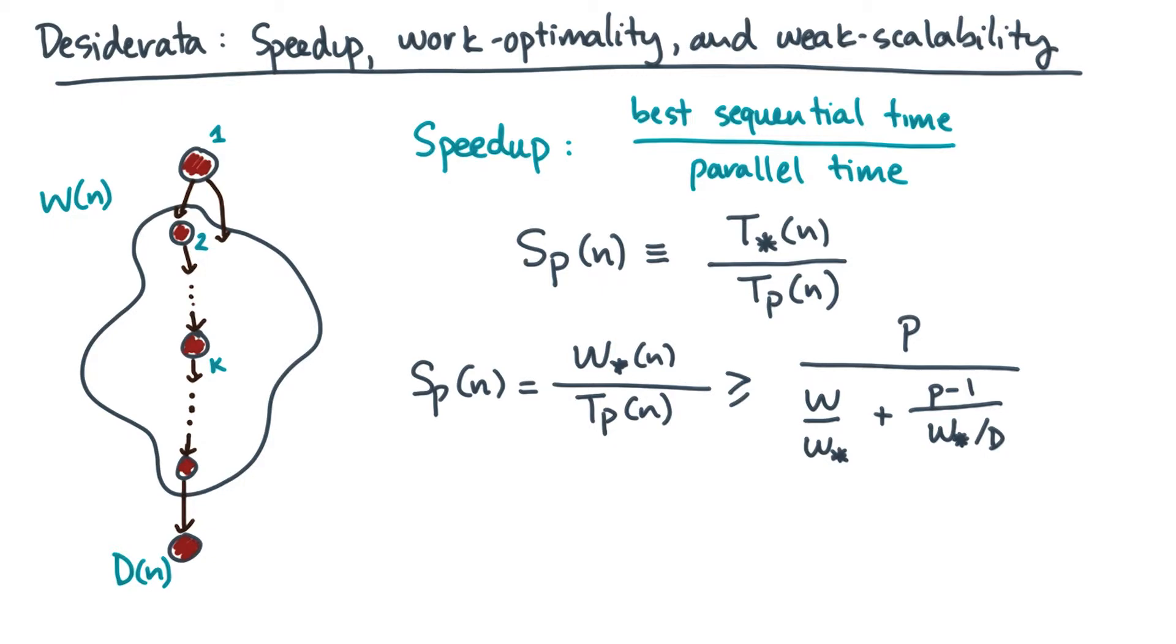Okay, written in this form, you can now immediately see what has to be true in order to get ideal scaling. First, notice the numerator, which has the number of processors in it. So relative to this goal, I will pay a penalty which is determined by the denominator. In other words, if I want to get linear scaling, I need the denominator to be a constant.